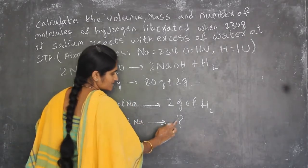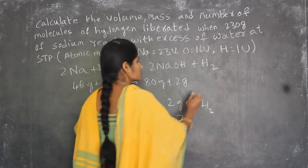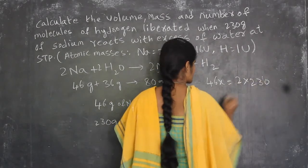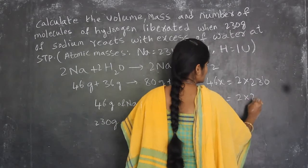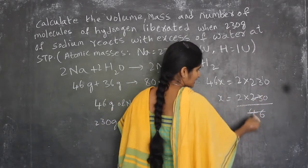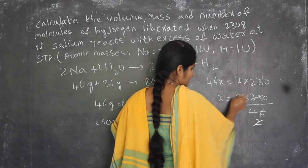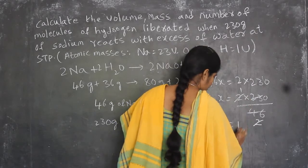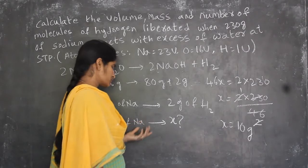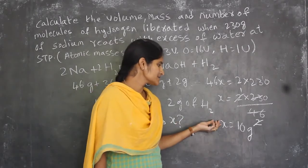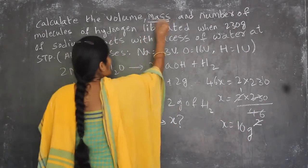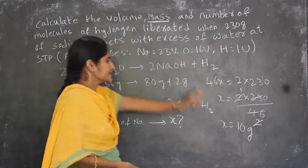We assume the hydrogen mass as X and cross multiply. So 46X = 2 × 230, giving X = 460 / 46 = 10 grams. By using 230 grams of sodium mixed with water, 10 grams of hydrogen gas is evolved. This is the mass of hydrogen produced — 10 grams.